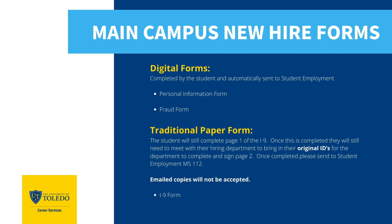Due to federal regulations, the I-9 will remain a paper copy. The student will have to complete page one and meet with the hiring department to complete page two and present their original forms of identification for verification. These forms must continue to be sent through campus mail to student employment at mail stop 112.